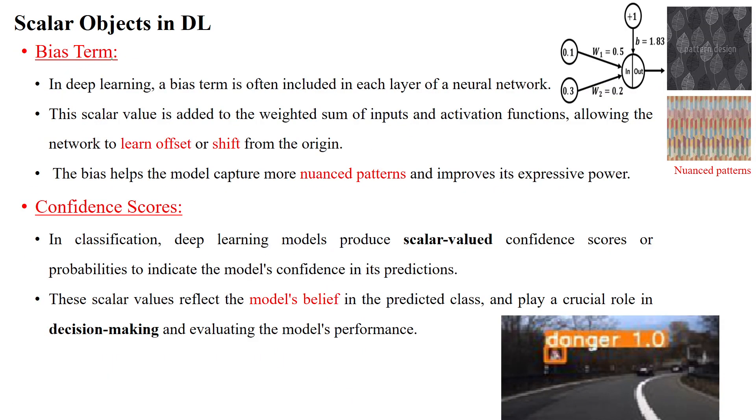Another scalar object is the bias term used in deep learning and machine learning models. It's included in each layer of a neural network. The bias value is a scalar value added with the weighted sum of inputs. The equation is z = w0*x0 + w1*x1 + ... + wn*xn. Here w0 is the bias term, added with the input values and weighted sum.